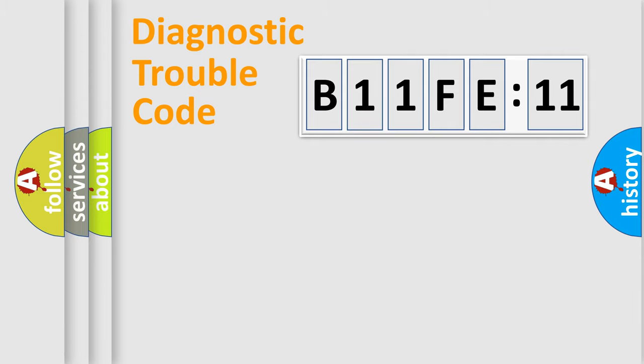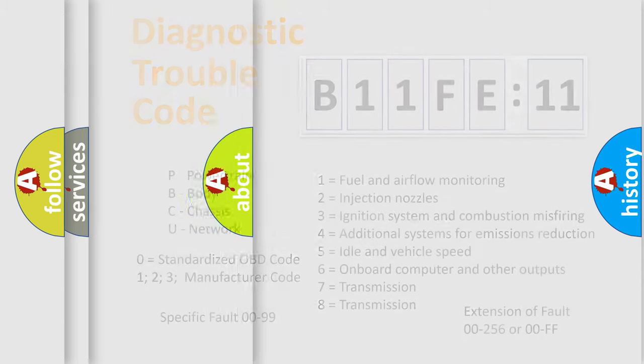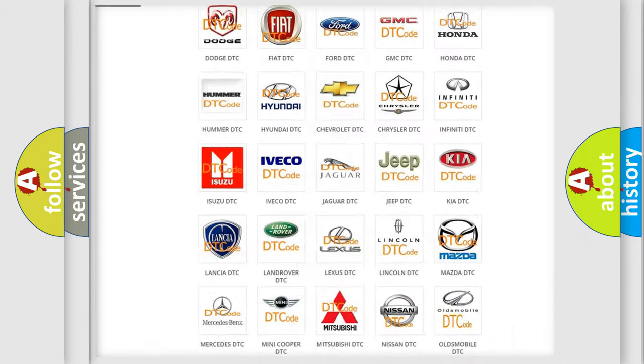Our website airbagreset.sk produces useful videos for you. You do not have to go through the OBD2 protocol anymore to know how to troubleshoot any car breakdown. You will find all the diagnostic codes that can be diagnosed in Chrysler vehicles. Also many other useful things.